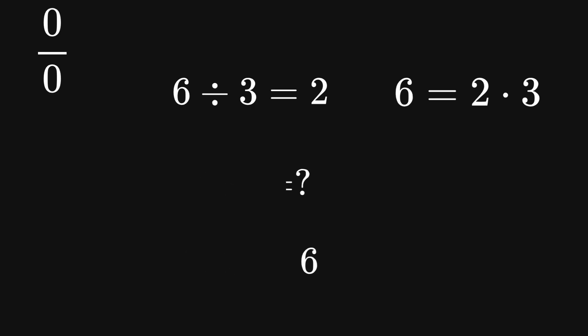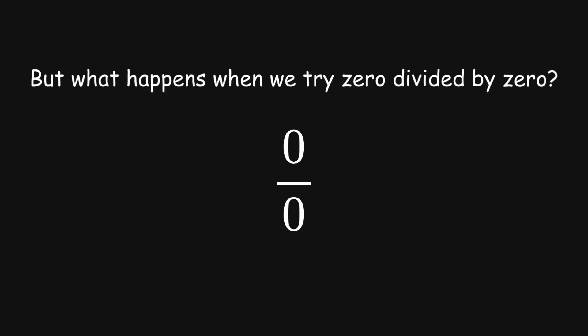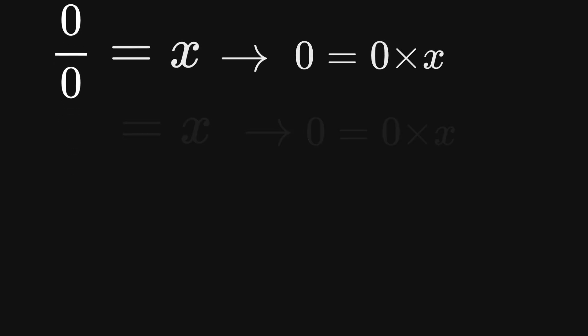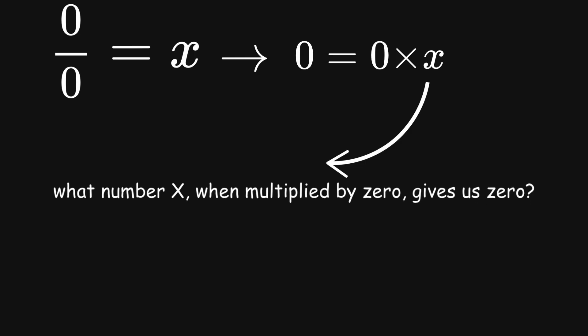But what happens when we try 0 divided by 0? Let's call the answer x. So we're saying 0 divided by 0 equals x. By our definition of division, this means 0 equals 0 times x. So what number x, when multiplied by 0, gives us 0? The answer is surprising.